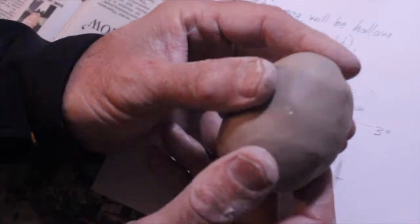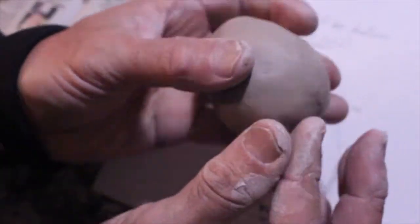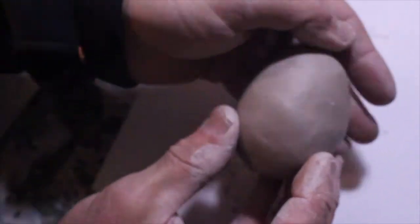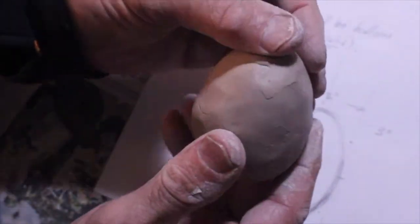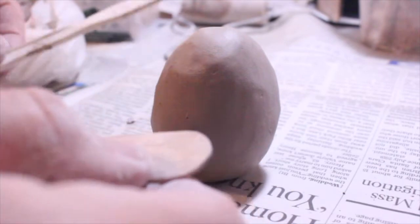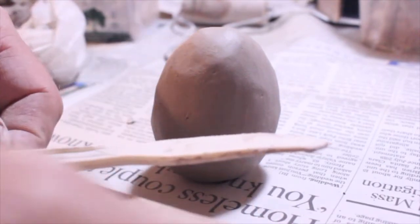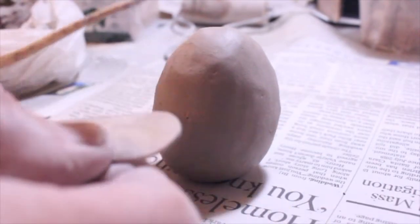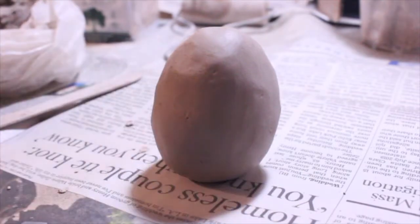Once you have this shaped to the egg shape, you're going to cut it in half. Using a popsicle stick or a knife, either one, you're going to cut this in half like this.